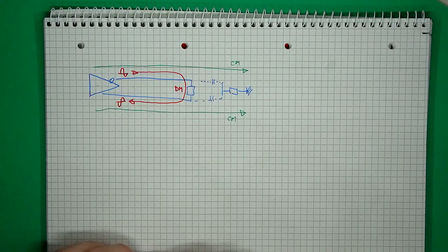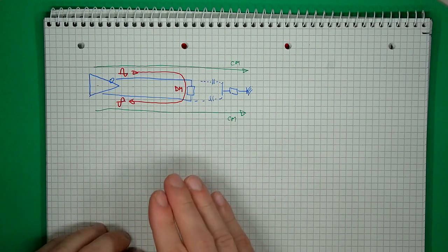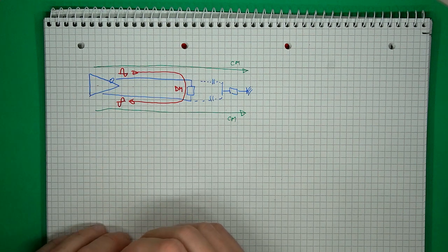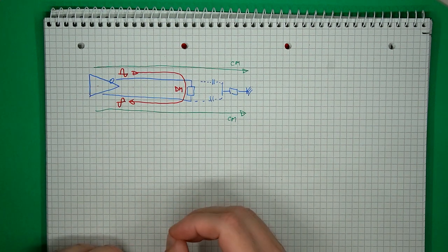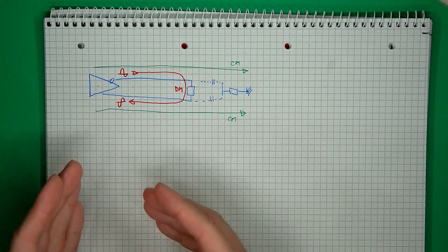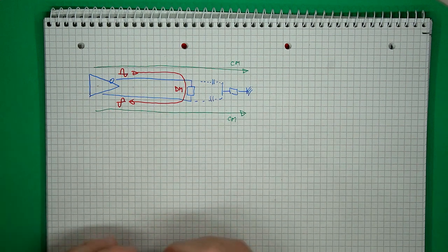But why should we even care about the common mode impedance? You're using differential lines with differential signals, right? Well, that is the intended use case, but no differential signal is perfect. In practice, when closely analyzing a differential signal, there is always some amount of imbalance, either as a phase shift or as an amplitude difference.